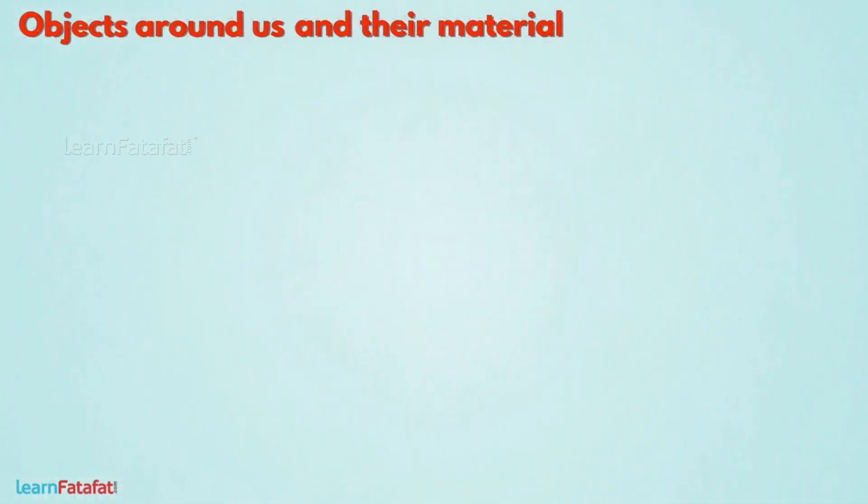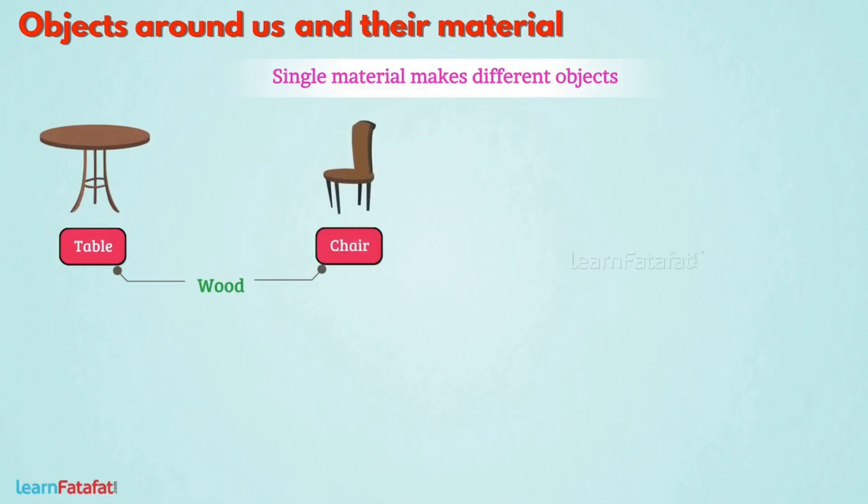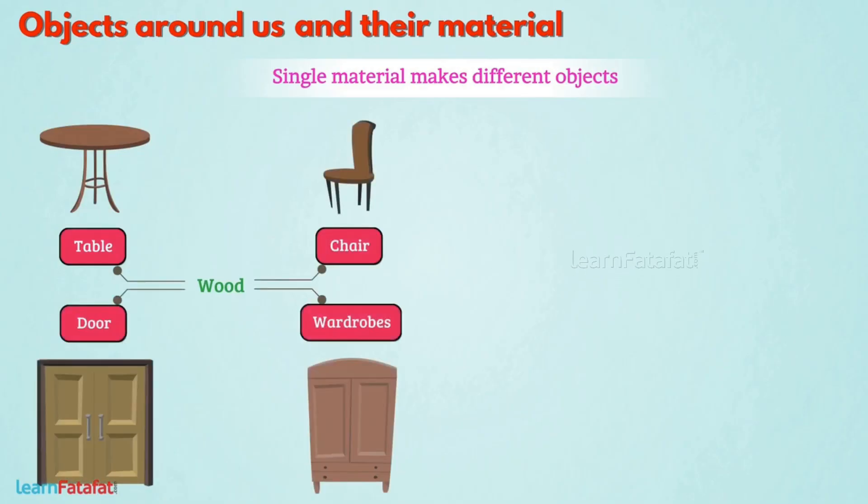It is also important to note that a single material can be used to make different objects. For example, from wood, we produce things such as tables, chairs, doors, wardrobes, etc.